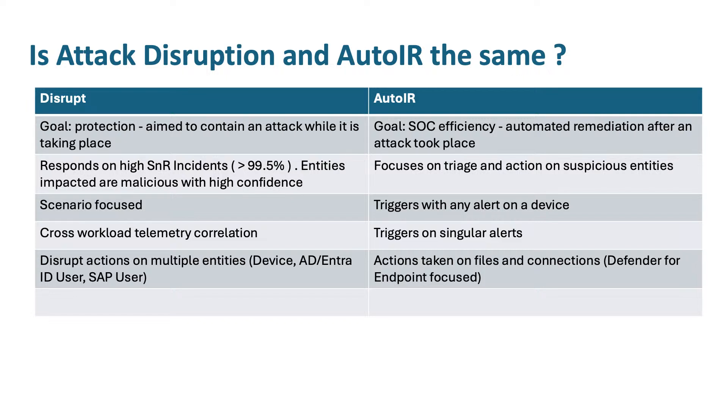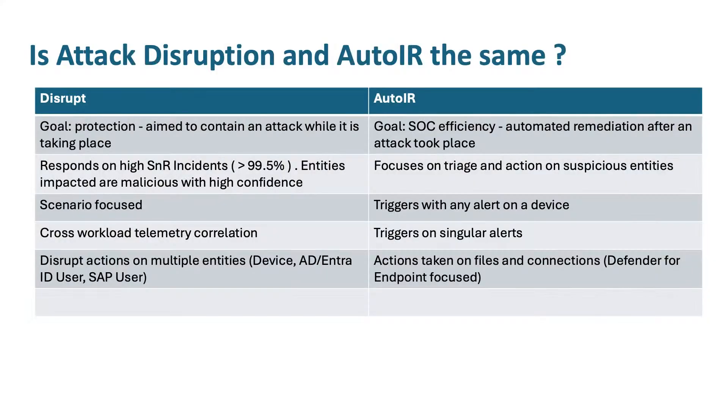Auto IR is also focusing on singular alerts from telemetry coming primarily from MDE. Attack disruption, on the other hand, looks across workloads. Depending on the scenario, it collects telemetry from MDI, MDE, MDA, and MDO in order to trigger a detection and take response actions on that scenario. Those are the main differences between attack disruption and auto IR.